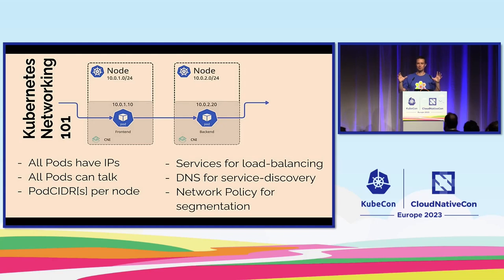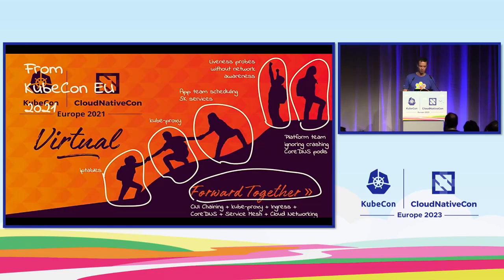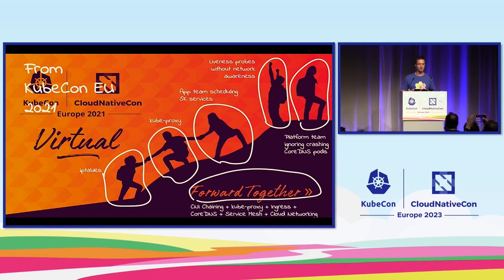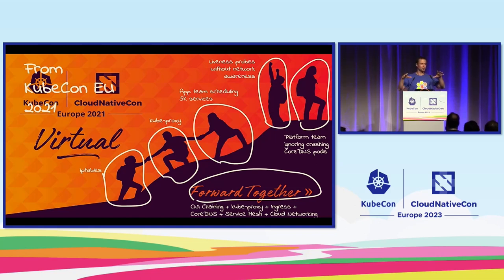That slide looked very simple, right? It looks beautiful. Kubernetes networking is very, very basic. But back in 2021 — that's a little bit more how it looks in practice. You have IP tables, you have kube-proxy using IP tables, you have an application team trying to schedule 5,000 services and really putting stress on kube-proxy. You have liveness probes succeeding, so applications seem like they're up and running, but they're not actually reachable. And you may have a platform team completely ignoring the crash-looping CoreDNS pods. This talk gives you tools to look into this and figure out where the problem actually is.